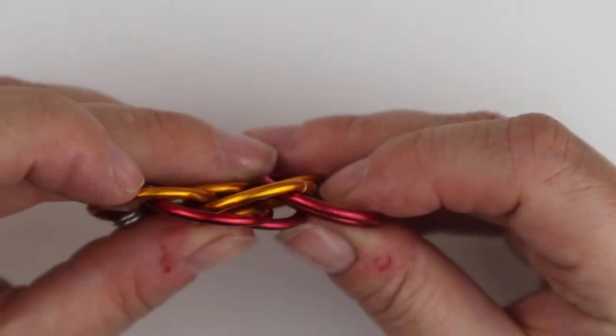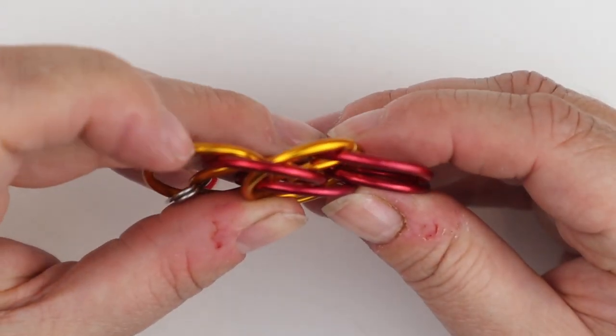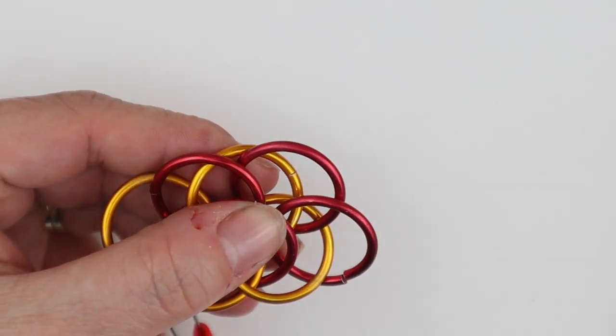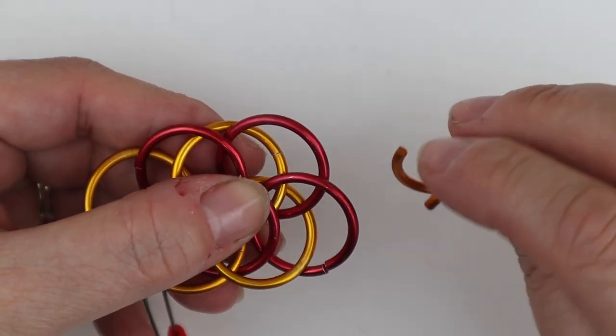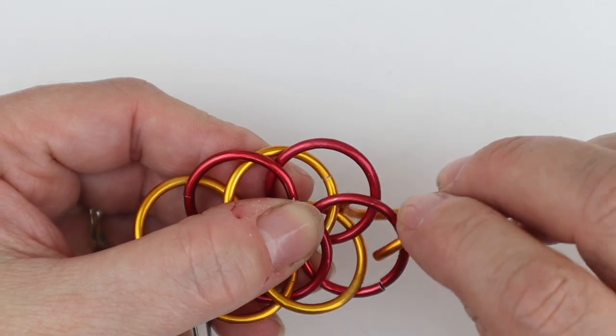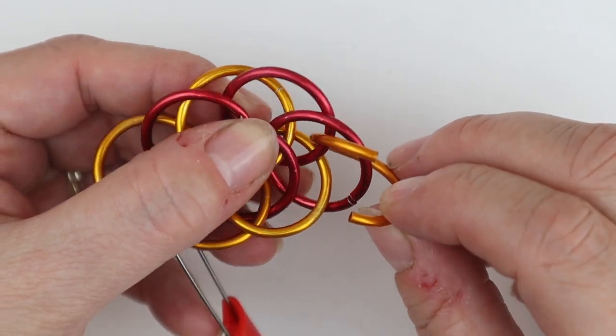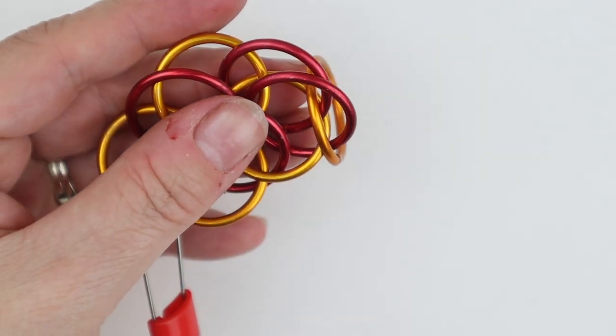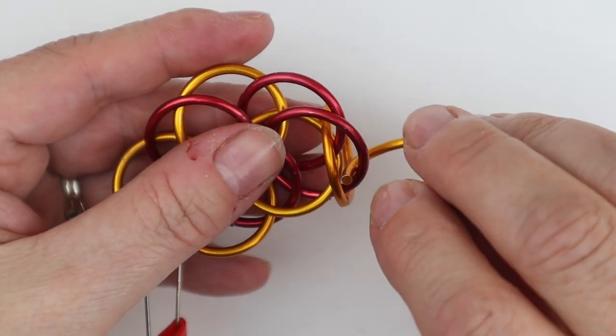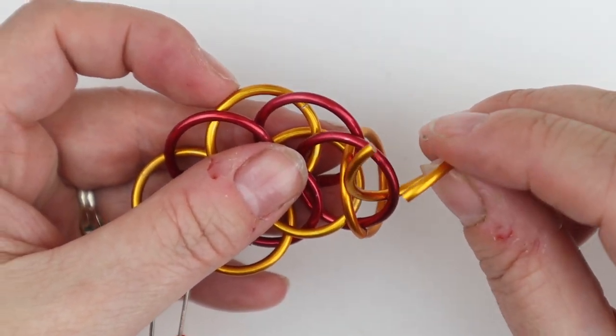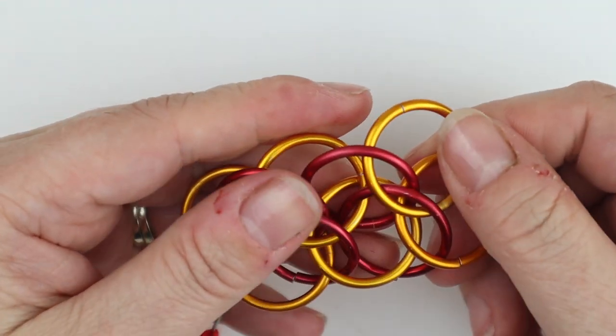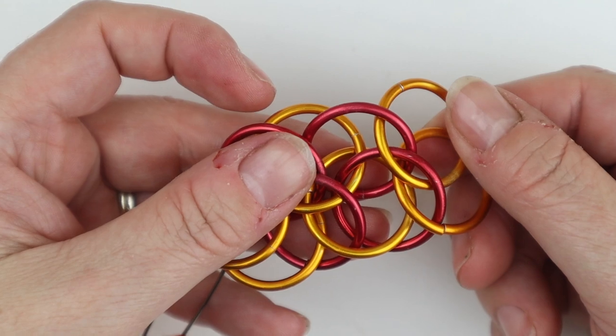I'm just going to pick it up so you can see there - down, up, down, up. So again we're just going to carry on exactly the same. Through the eye of where the new pair are, through the eye and close, and over to the right. And this time with the second jump ring around the eye and close. So through the eye and around the eye.